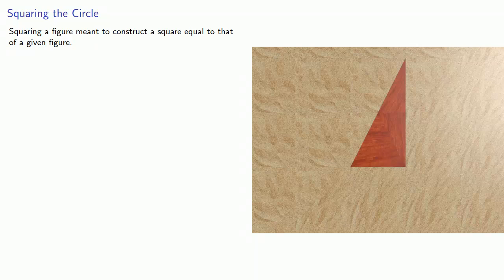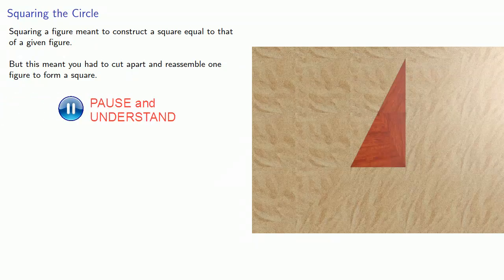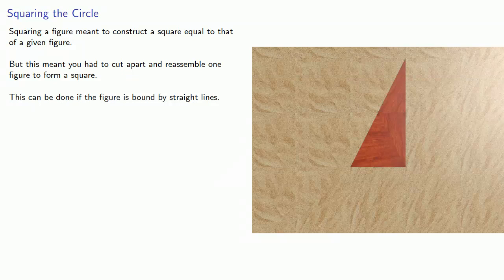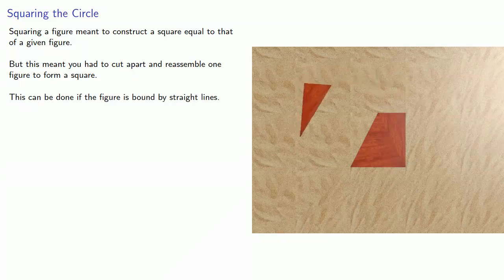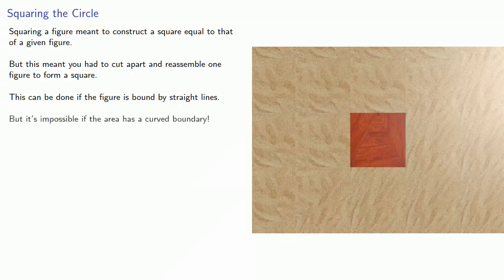But what does this mean? To the Greeks, this meant you had to cut apart and reassemble one figure to form a square. And this can be done if the figure is bound by straight lines.